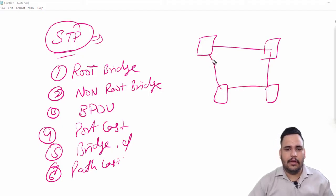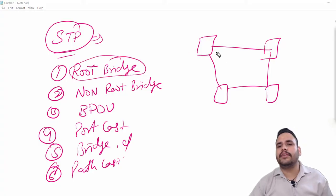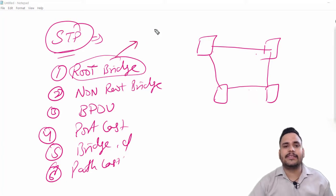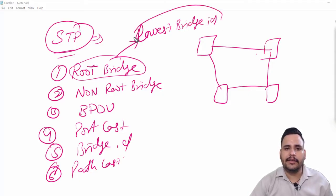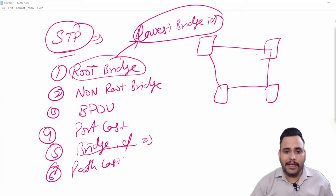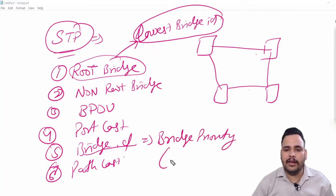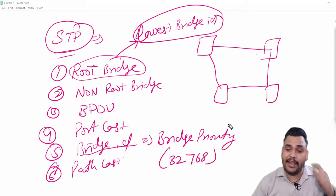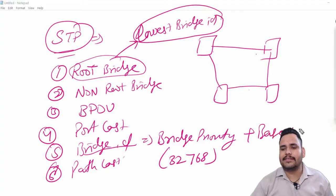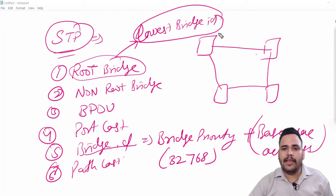For example, I have four switches here, all connected with each other. Which one becomes the root bridge? The root bridge concept is based on the lowest bridge ID. Bridge ID is the combination of bridge priority — which is by default 32768 on every switch — plus the base MAC address.